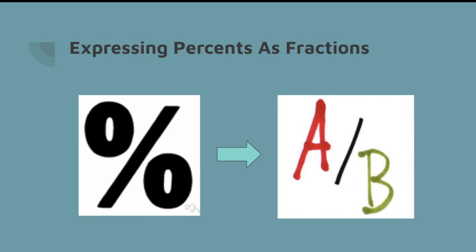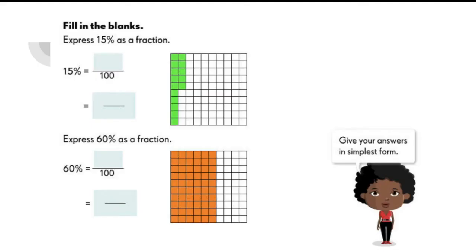Now this time, let's take a look at this skill. Let's learn how to express percents as fractions. Observe carefully this 100 squared grid. So as you can see, 15 out of 100 is colored, or 15% is equal to 15 over 100. Now remember, when you are writing a fraction, always try to give your answer in simplest form. So 15 over 100 in simplest form is 3 over 20.